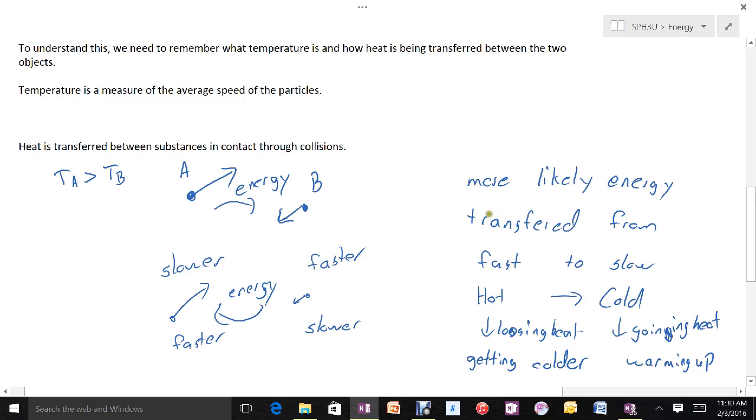And the cold object is gaining heat. So because this process is a little bit more likely than the other process, heat is more likely to go from the hot objects to the cold objects, and the energy tends to flow from the hot to the cold, bringing the two temperatures together.